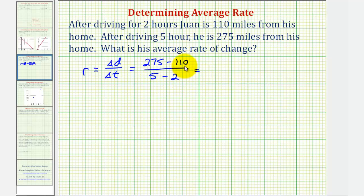Well, 275 minus 110 equals 165. This would be miles. And then five minus two is equal to three, which would be three hours.